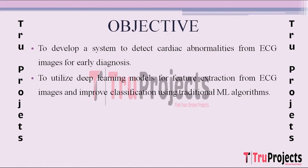To achieve accurate detection, the project leverages deep learning models for feature extraction from ECG images. These models are designed to automatically identify relevant patterns and features within the images, improving the accuracy of the subsequent classification process.